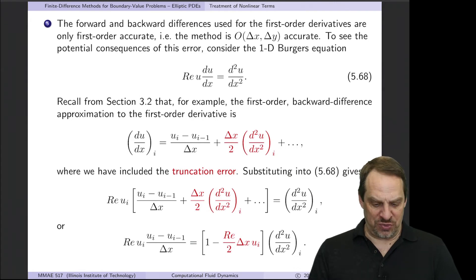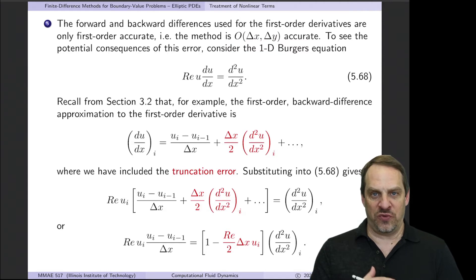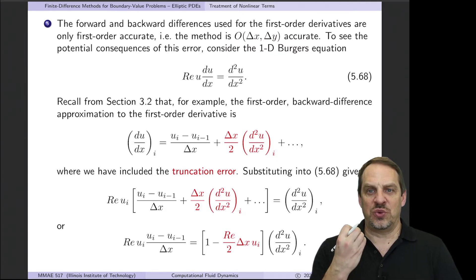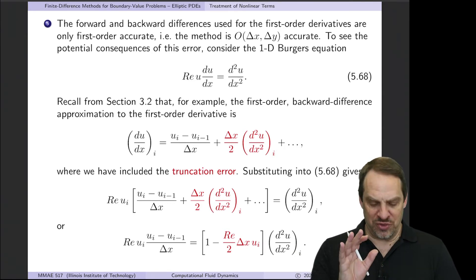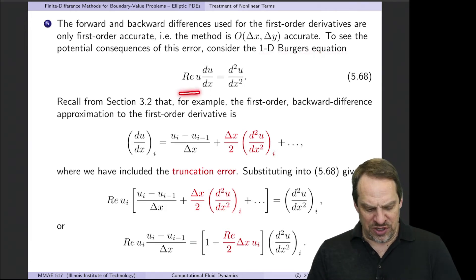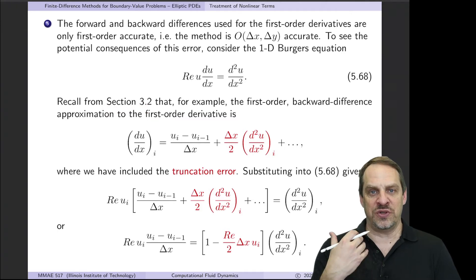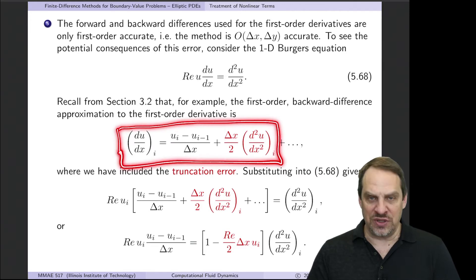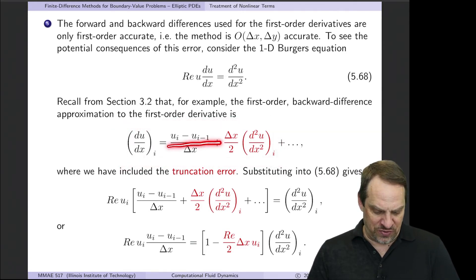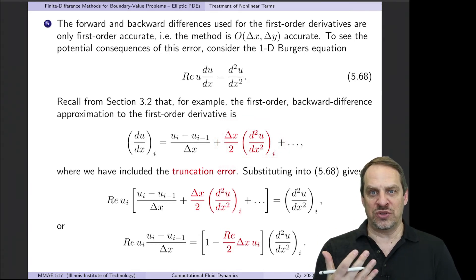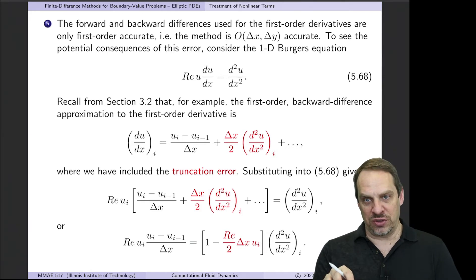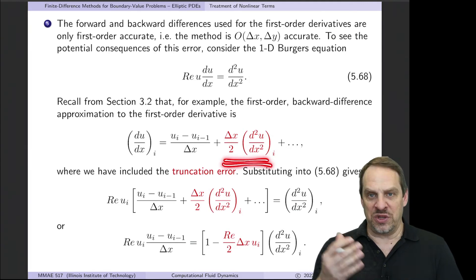The primary disadvantage of upwind-downwind differencing is that it is only first-order accurate, since we've used first-order accurate forward and backward differences in the convective derivatives, reducing from second-order to first-order accuracy. We'll address how to restore second-order accuracy in a moment, but first let's look at the consequences. Taking a 1D Burger's equation — RE times U dU/dX = d²U/dX² — and examining the Taylor series truncation error for the backward difference approximation of the first derivative, we want to compare the magnitude of the omitted term with the included terms.